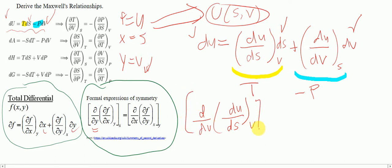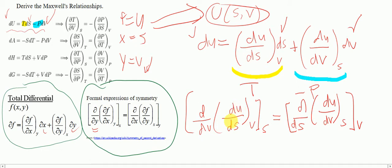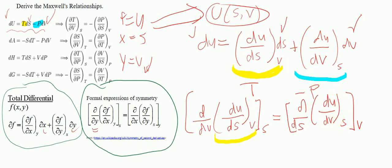All this bracketed at constant S on the left-hand side. On the right-hand side, we do the same thing plugging in x, f, and y: d/dS of (∂u/∂V at constant S), bracketed at constant V. We can see that the terms for T and negative P appear, since ∂u/∂S at constant V is temperature, and ∂u/∂V at constant S equals negative P.